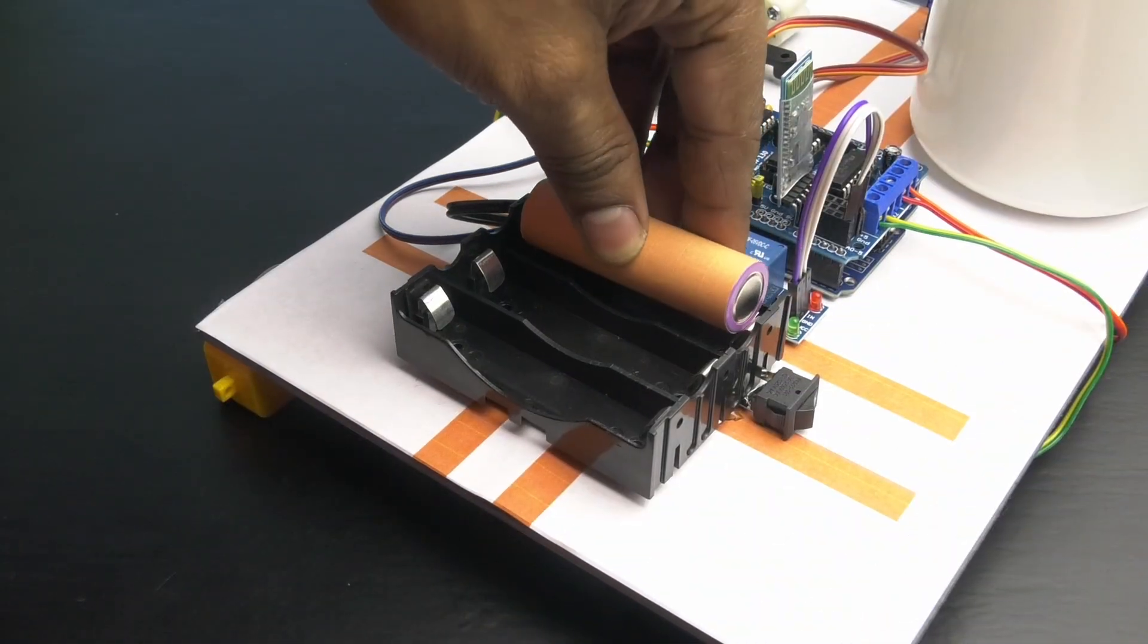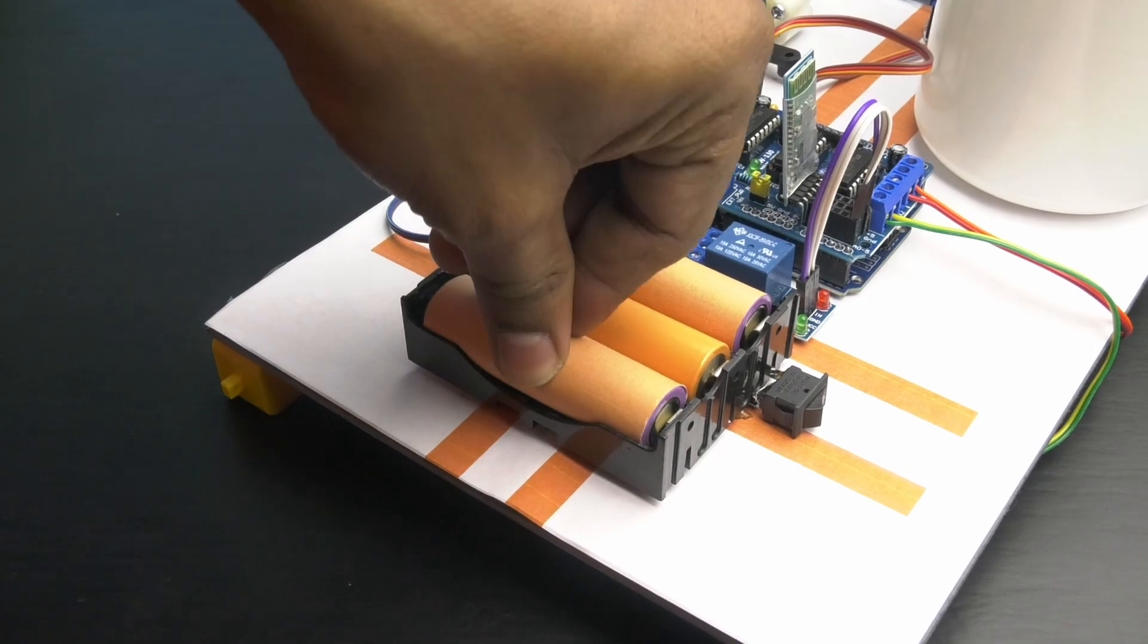Next, connect the batteries and mount all the wheels to complete the RC car.